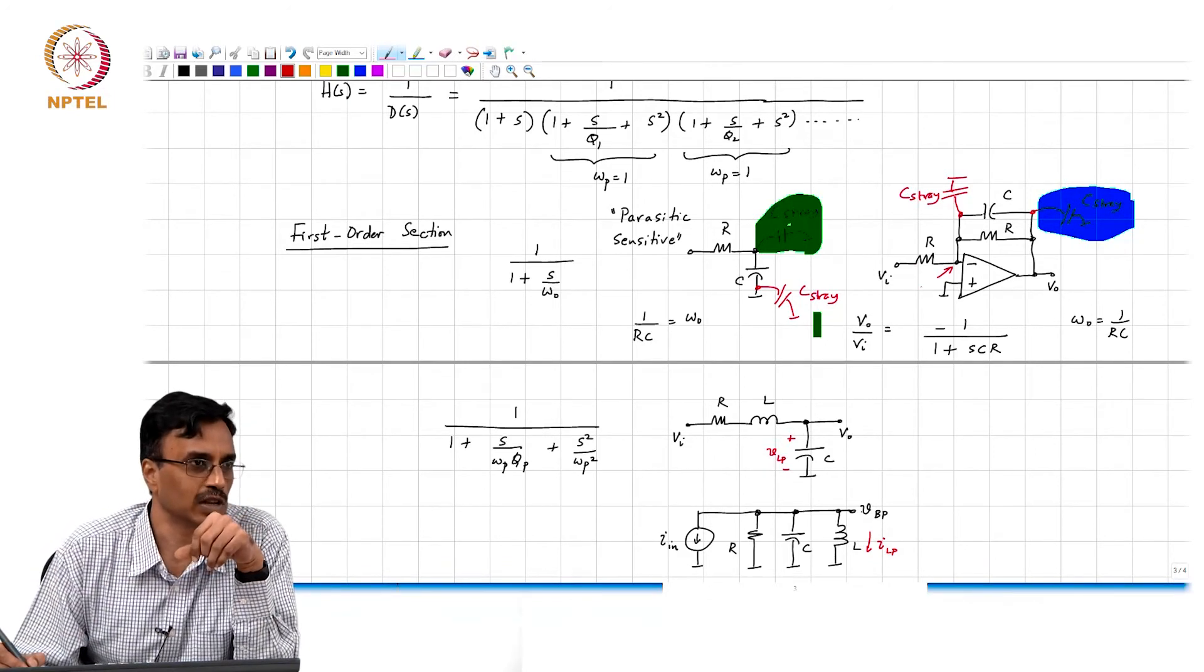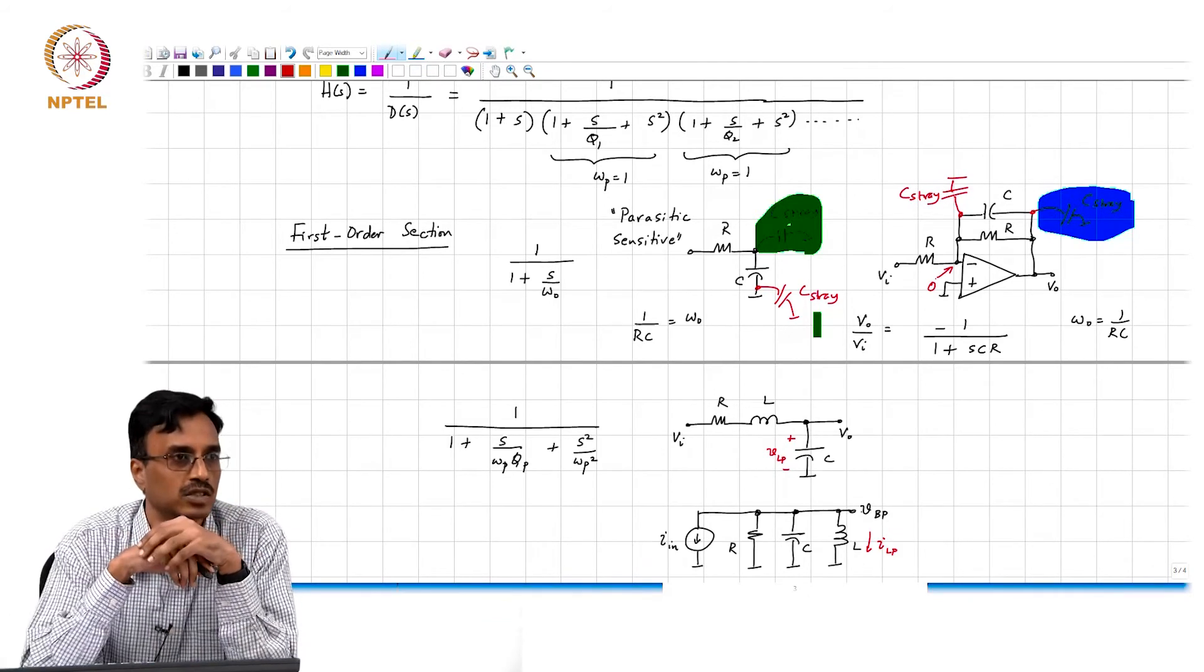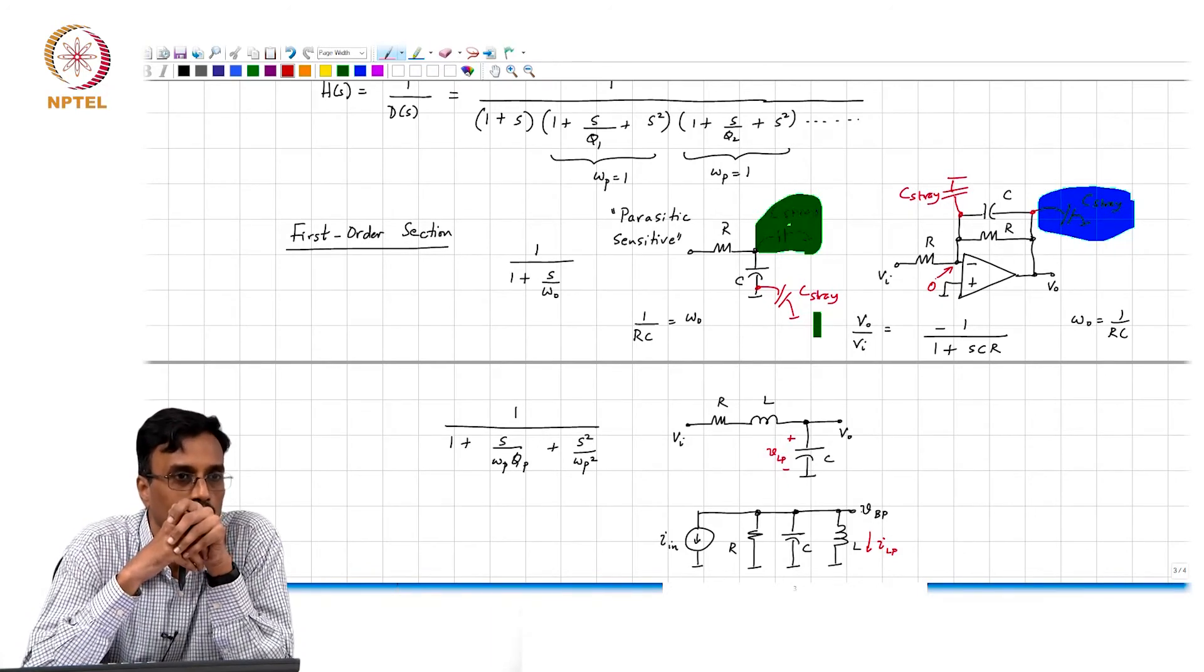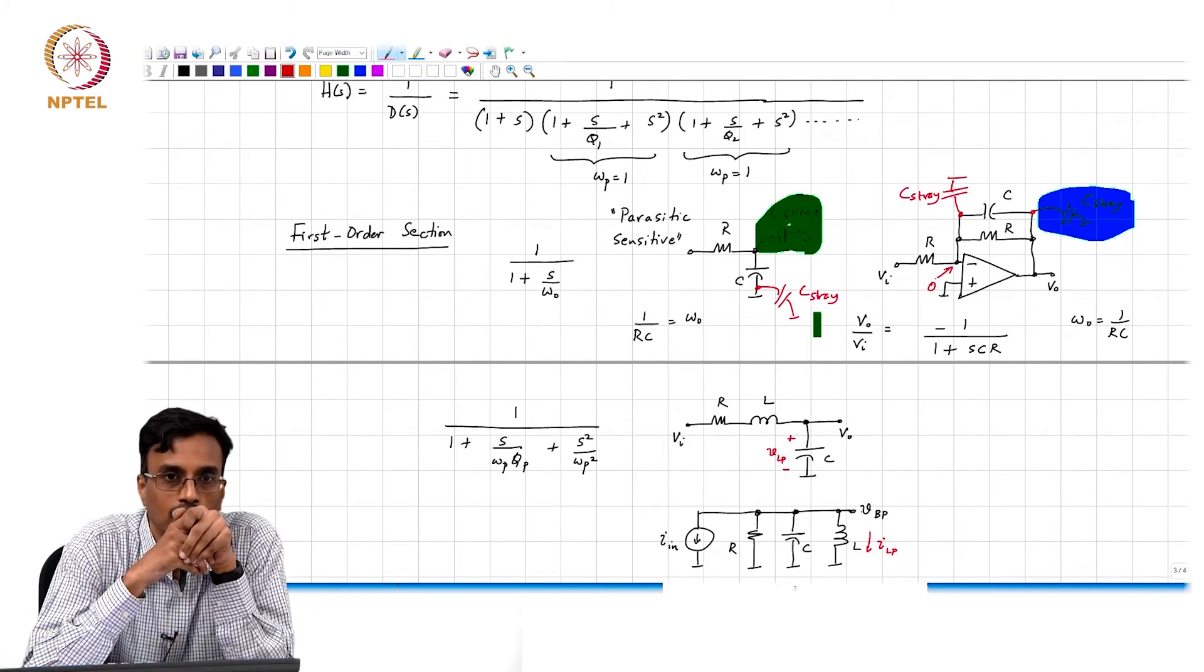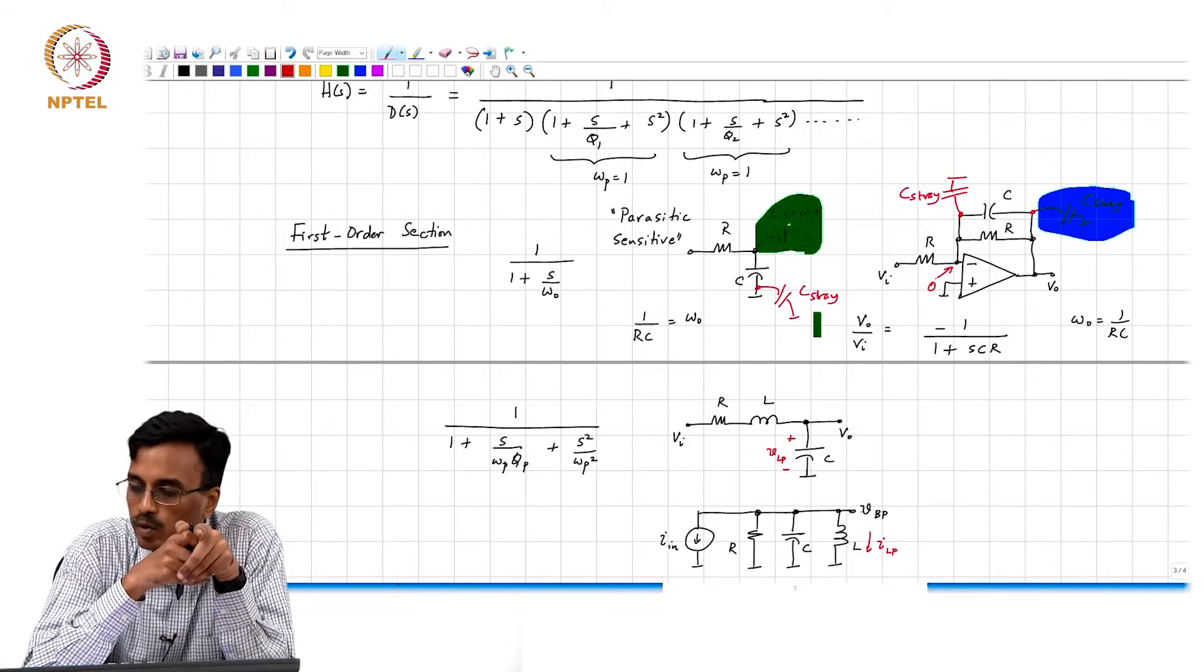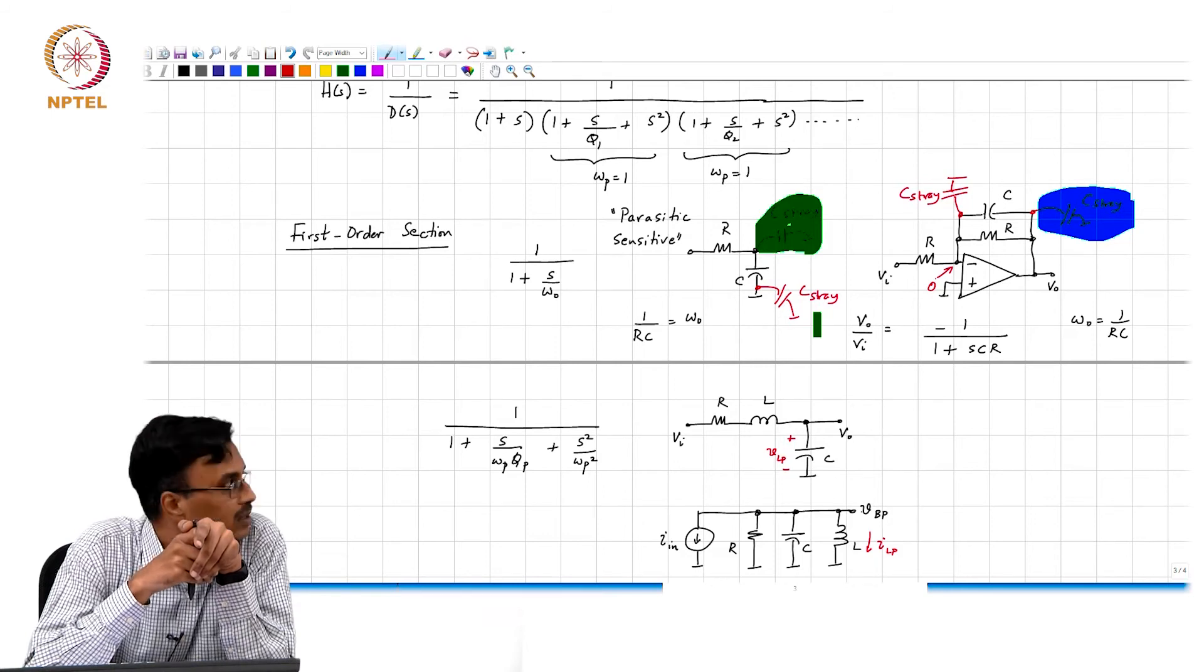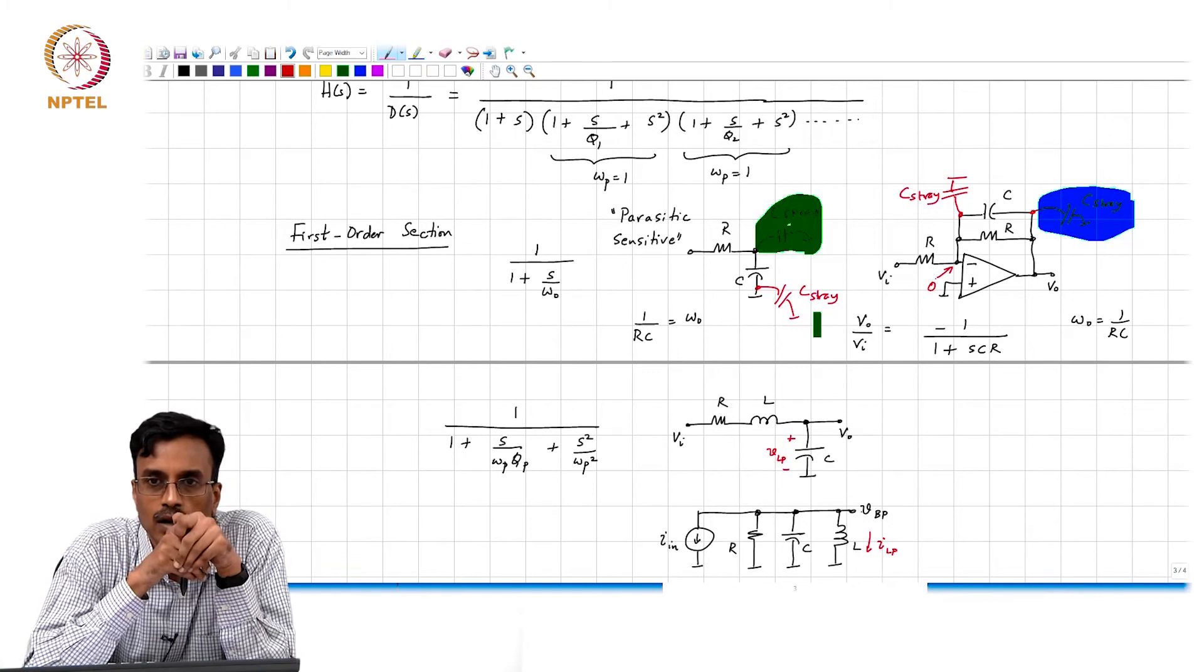You may want to use the fact that the virtual ground potential is an ideal op amp. What is the potential at the potential of the virtual ground? It is 0.